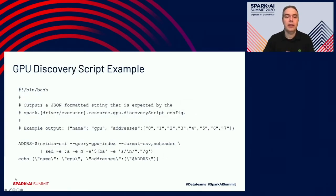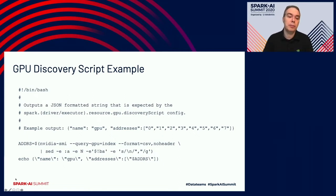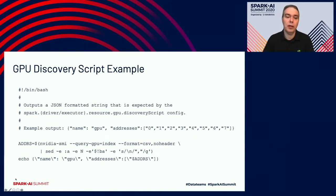Speaking of that discovery script example, here is a discovery script where we use a shell script to detect what accelerated resources we have on a node. That script just needs to produce JSON formatted strings that are going to be parsed by Spark to determine the accelerators discovered on a node. This particular example uses the NVIDIA SMI binary, which is installed with the NVIDIA driver, and produces output that is then marshaled into a form that Spark can use to detect the GPUs on that system.